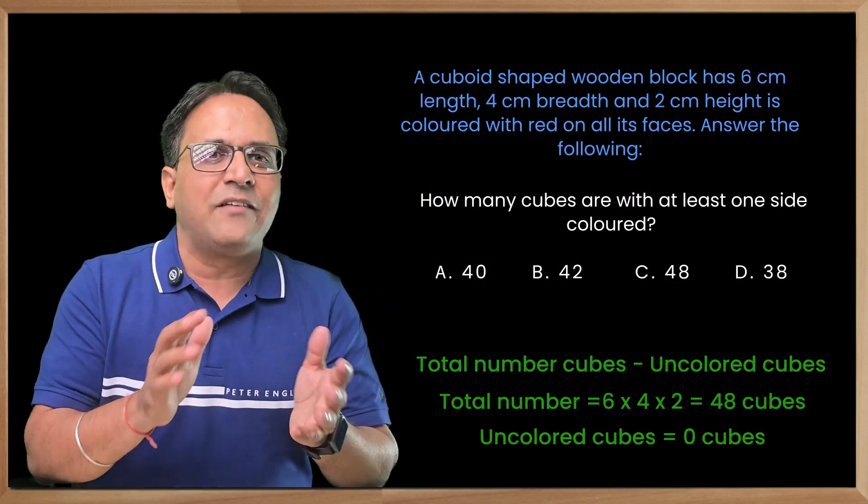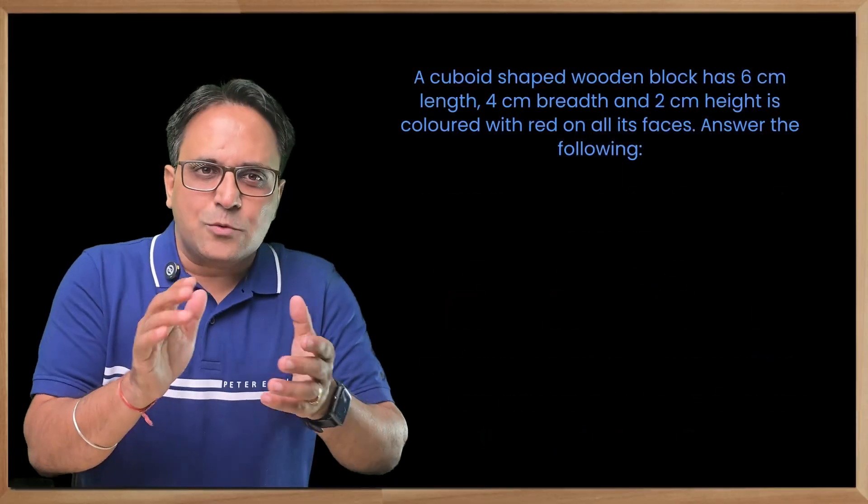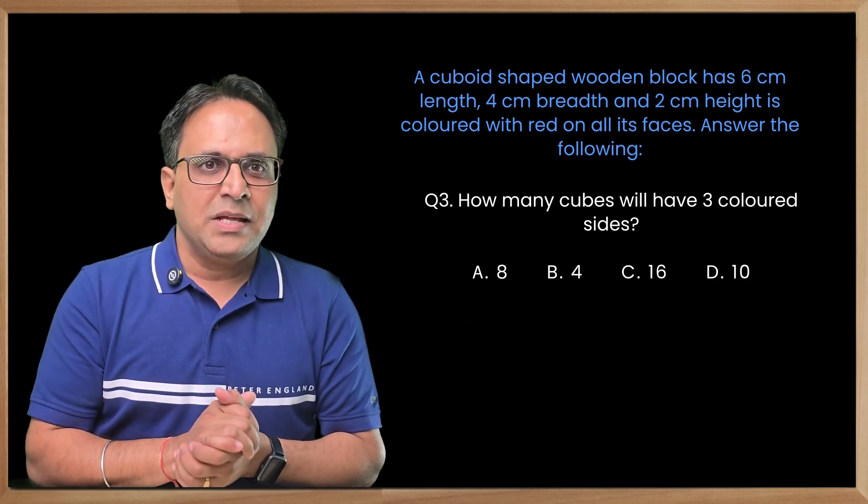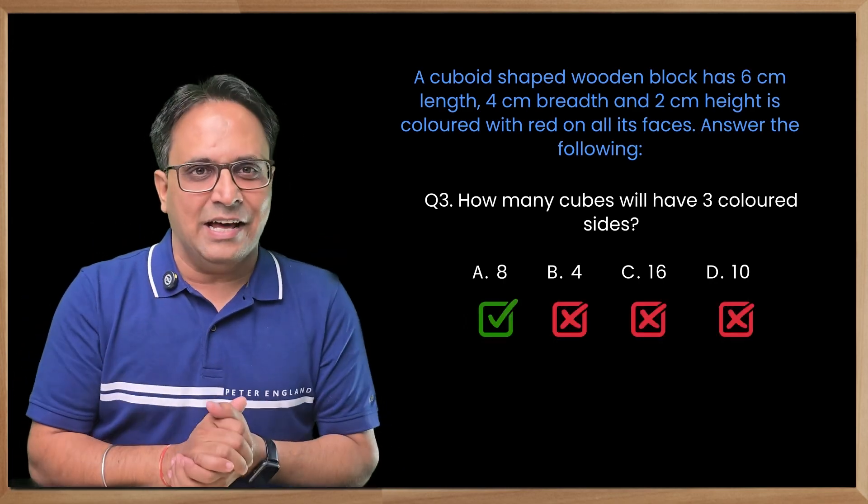Next one: How many cubes will have three colored sides? Three sides colored can only be on the corner cubes, and that is eight in number.